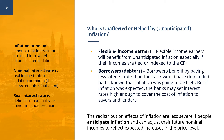Unanticipated inflation may also benefit borrowers. In our earlier example, real income is distributed away from the owners of Bank A towards borrowers like Ali. The redistribution effects of inflation are less severe or eliminated altogether if people anticipate inflation and can adjust their future nominal incomes to reflect expected increases in the price level. For example, lenders may avoid the harmful effects of inflation by charging an inflation premium together with their nominal interest rate to the borrower.